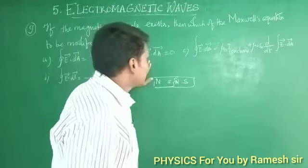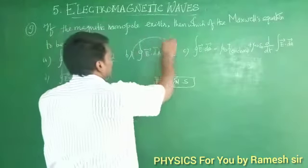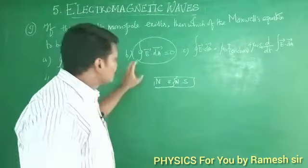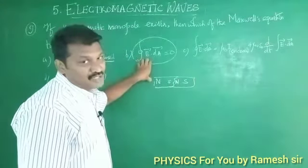The monopole is enclosed. The net flux, if this is zero, that is zero, it should be corrected.